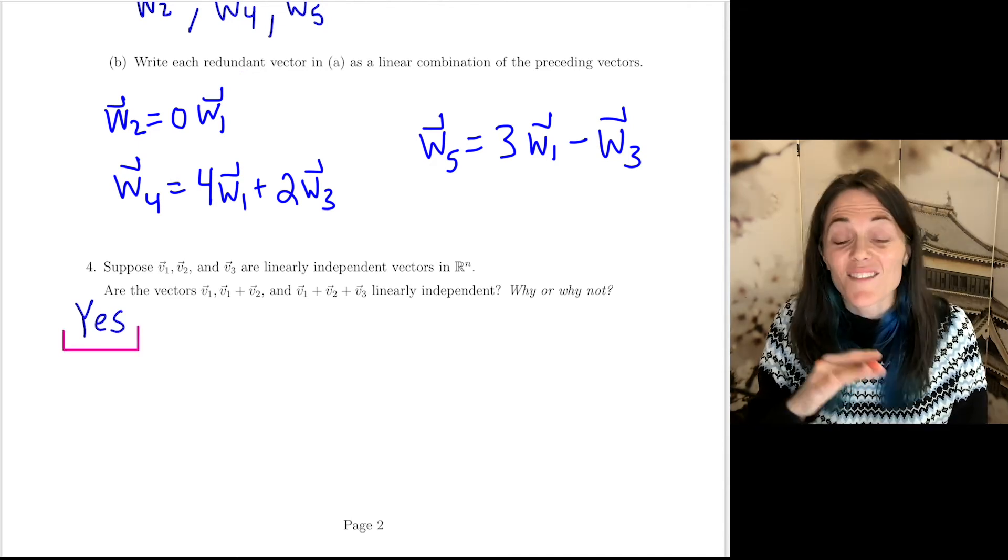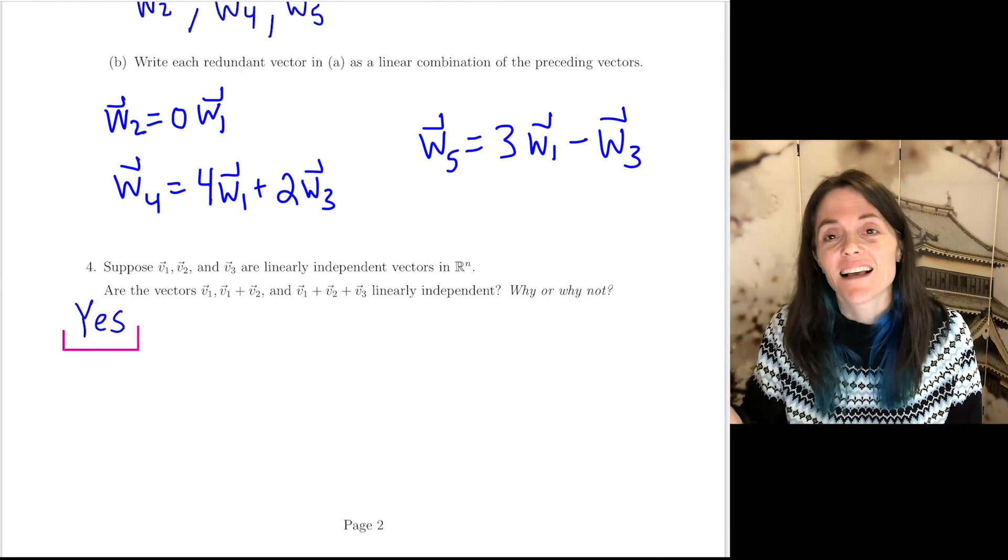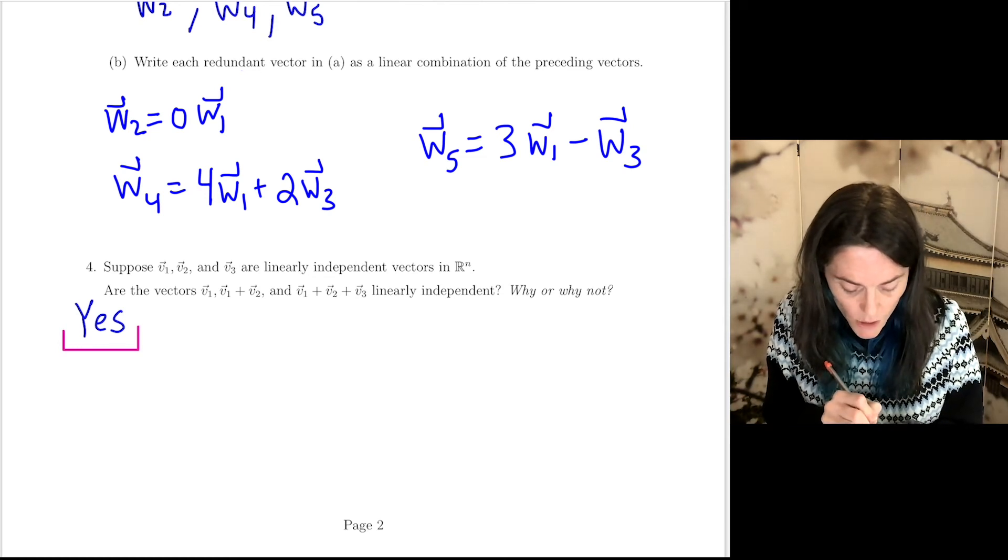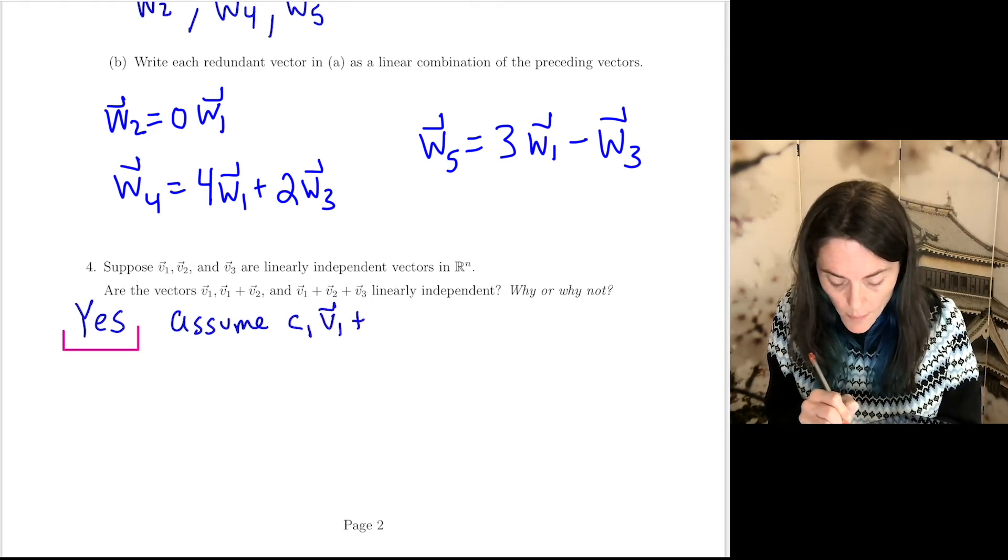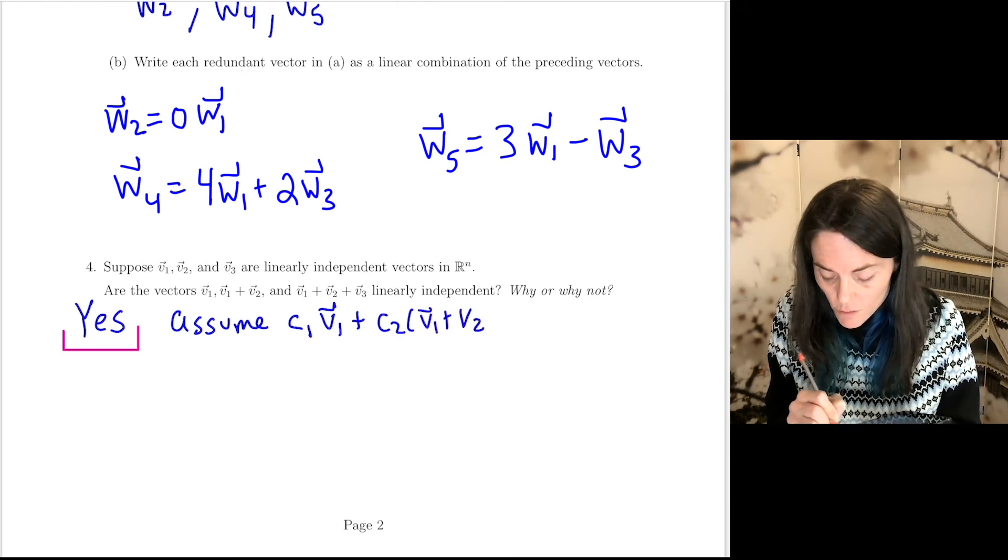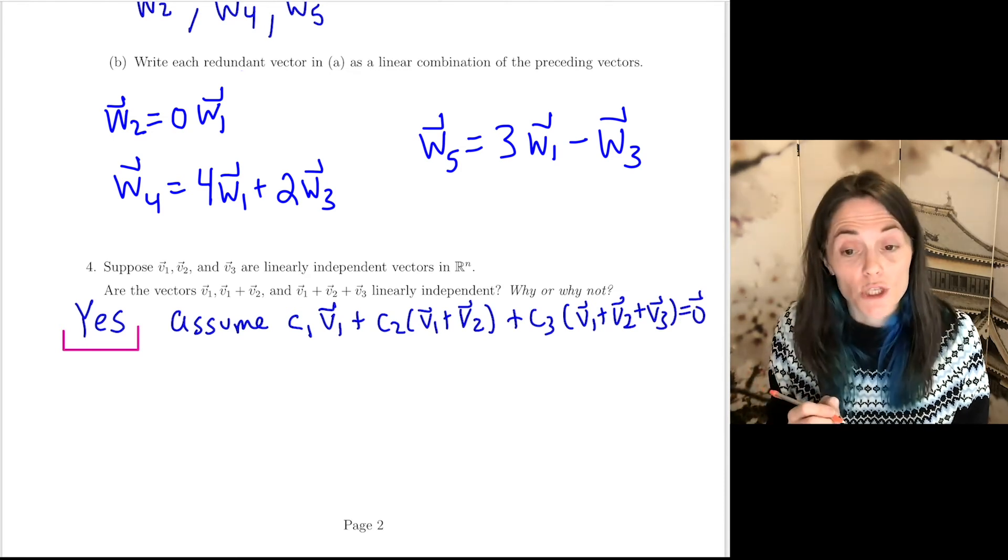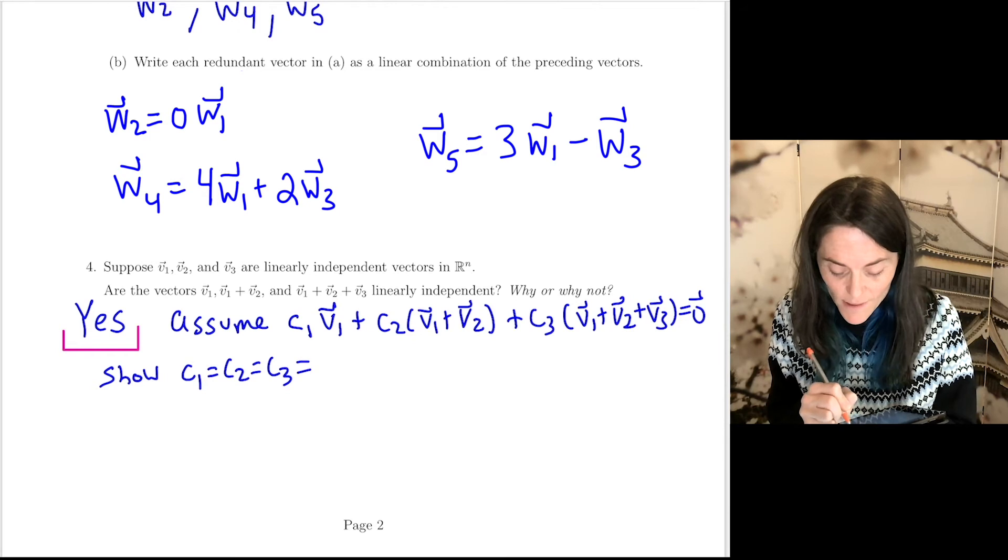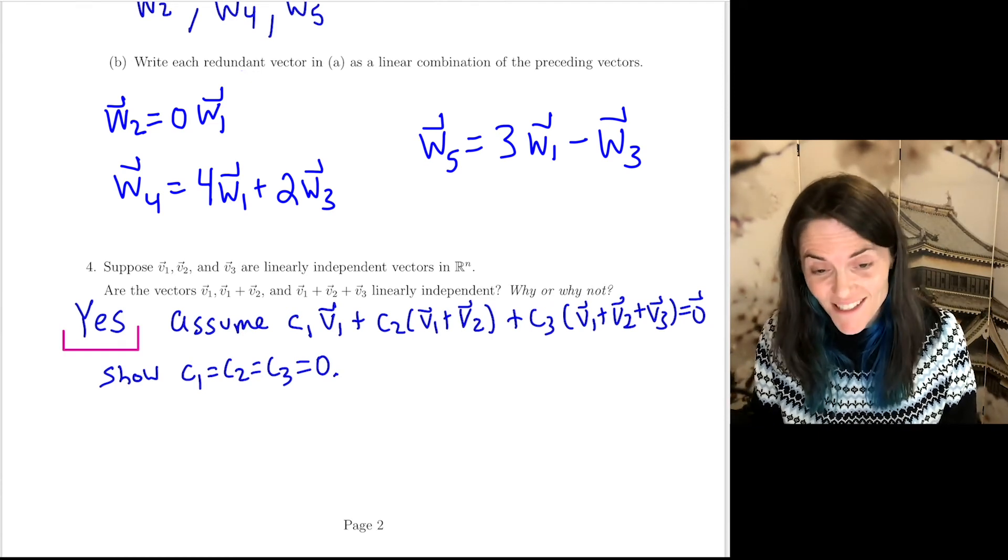Yes, but we must justify. For this one, I will use the characterization of linear independence, which says the only linear relation amongst the vectors is the trivial one. So let's do that. Let's assume we have C1 V1 plus C2 times V1 plus V2 and then plus C3 times V1 plus V2 plus V3 equals 0. And I want to show C1, C2, and C3 are all 0.